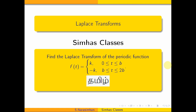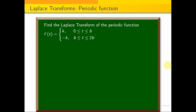Hi students, welcome to CMOS classes. Laplace transform — here is the periodic function Laplace transform. The example of the periodic function is f(t) = k for 0 ≤ t ≤ b, and -k for b ≤ t ≤ 2b. This is a periodic function with period 2b.